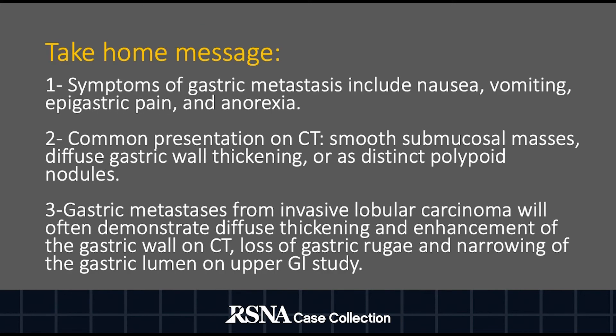The take-home messages of this case are as follows. Symptoms of gastric metastases include nausea, vomiting, epigastric pain, and anorexia, which may be nonspecific. Gastric metastases usually present on CT as smooth submucosal masses, diffuse gastric wall thickening, or as distinct polypoid nodules. Gastric metastases from invasive lobular carcinoma will often demonstrate diffuse thickening and enhancement of the gastric wall on CT, loss of gastric rugae, and narrowing of the gastric lumen on upper GI study. Thank you for your time.